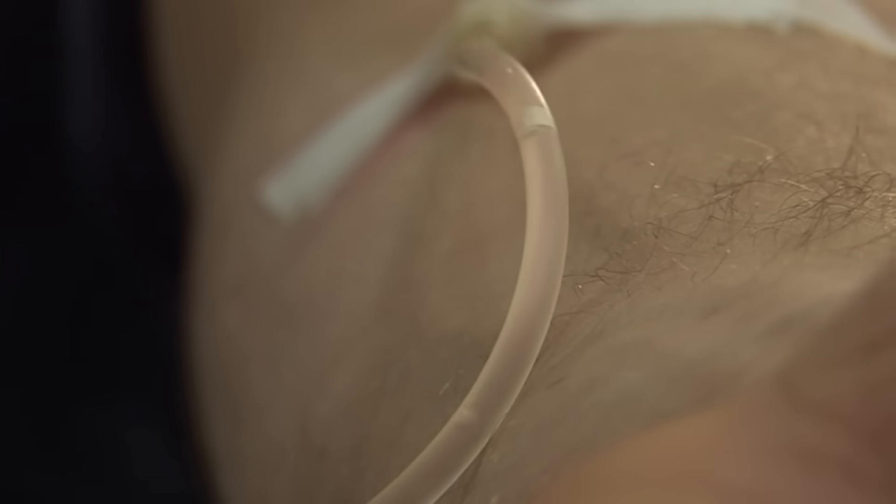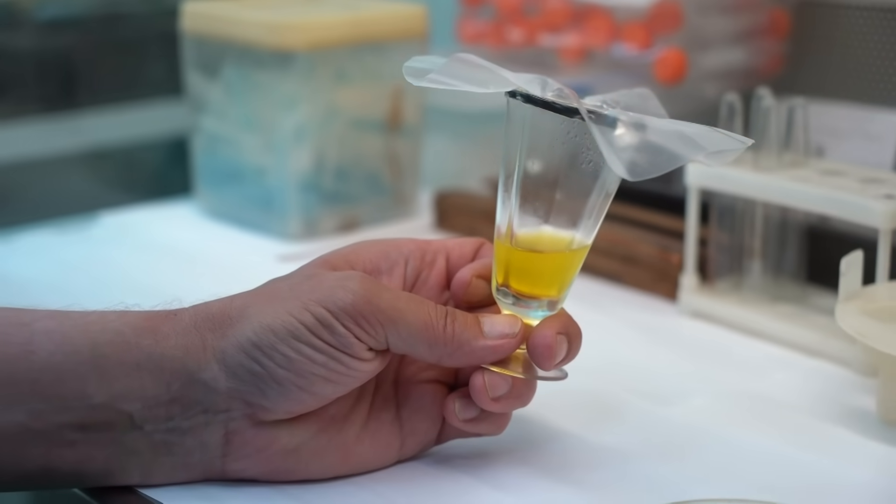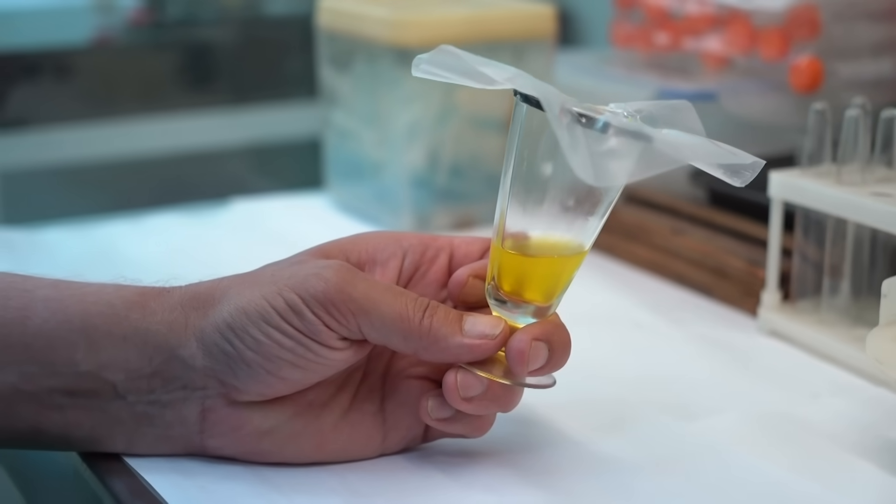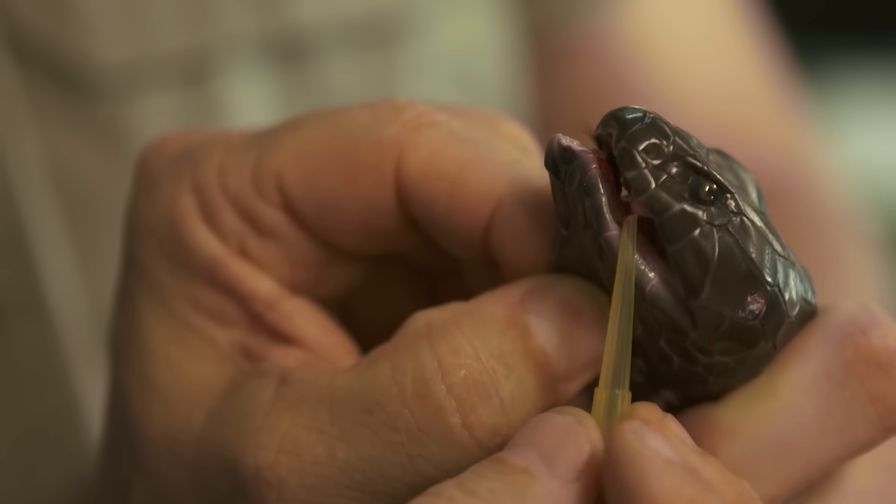Before antivenom was readily available, every bite from an inland taipan was fatal. But why is it so lethal? And how does it do so much damage to the human body? And how did it evolve to become the most dangerous venom in the world?